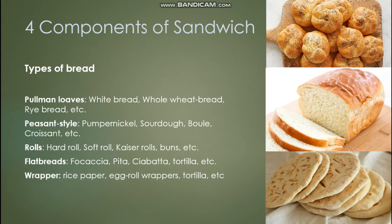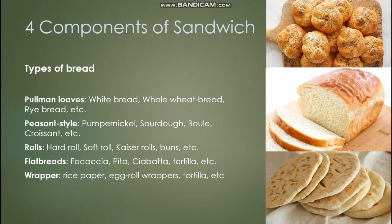There are four types of bread we can use. First, Pullman loaves — for example, white bread or whole wheat bread. Second, peasant-style loaves — for example, pumpernickel, sourdough, croissant, and boule. Croissants are a European-style bread, typically large and brown. Third, rolls — including hard roll, soft roll, kaiser roll, and buns, such as pandesal which is also used in McDonald's sandwiches.